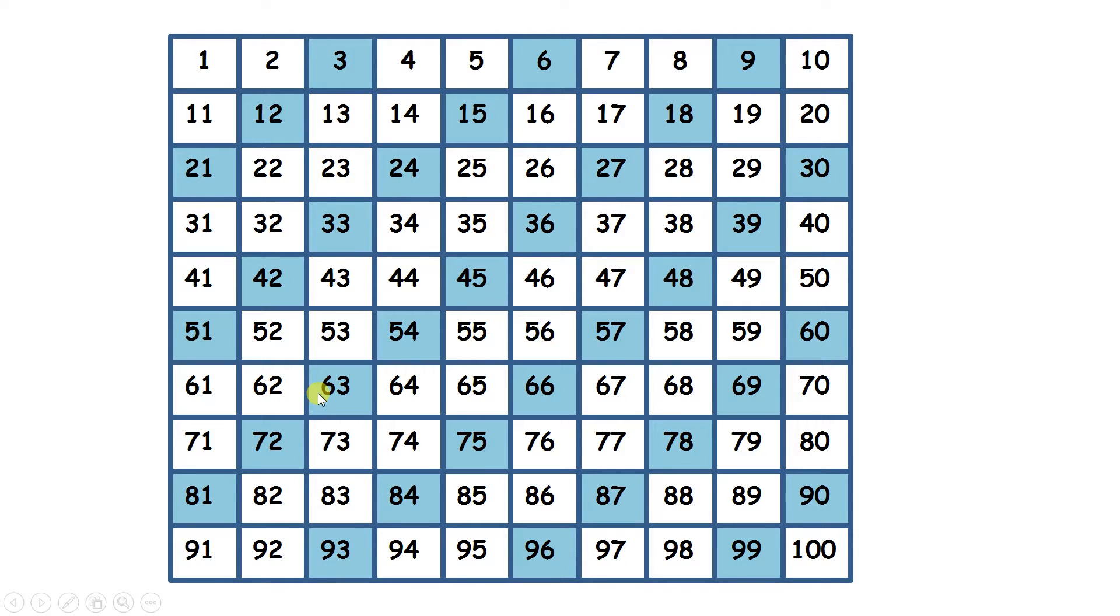But the interesting thing with multiples of 3 is that when you add up the digits of a number, you also have a multiple of 3. So if we look at the number 42, 4 plus 2 makes 6 and 6 is also a multiple of 3. Or with the number 63, 6 plus 3 is 9, 9 is also a multiple of 3.